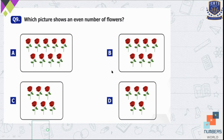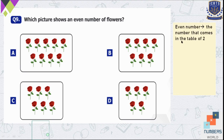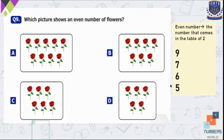Question number 9 — which picture shows an even number of flowers? An even number is one that comes in the table of 2, meaning it is divisible by 2. In option A there are 9 flowers. In option B there are 7 flowers. In option C there are 6 flowers. In option D there are 5 flowers. Looking at the numbers, 6 comes in the table of 2, so option C is our correct option.